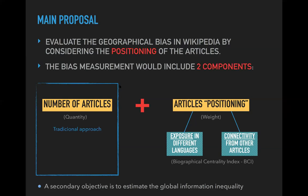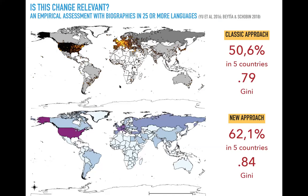The positioning includes two components: first, the exposure of articles in multiple languages; and second, their connectivity with other articles — observing the hyperlink network and calculating centrality measures like PageRank. I summarize both components into a single indicator called the 'biographical centrality index.' To test this approach, I made an empirical study with biographies available in 25 or more languages in Wikipedia, asking how geographically biased is the biographical information about these famous people.